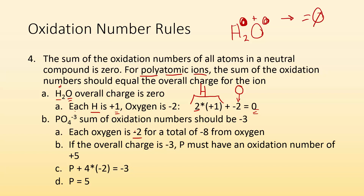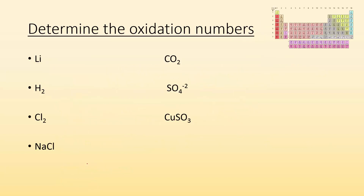I know each oxygen is minus two, and there are four of them, so I have minus eight from all the oxygen. Overall the charge is minus three. So I've got to figure out what the phosphorus charge is going to be. The whole thing has to equal minus three; I have minus eight from the oxygens, so phosphorus must have an oxidation number of plus five. That's how you figure out oxidation numbers.